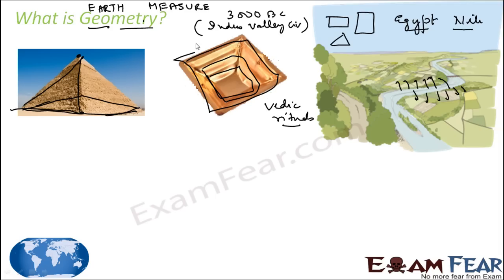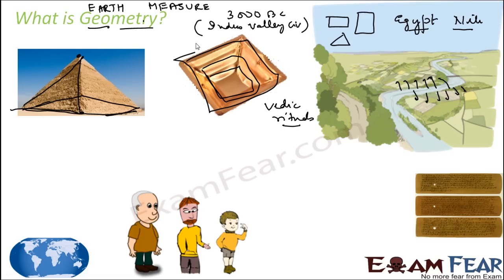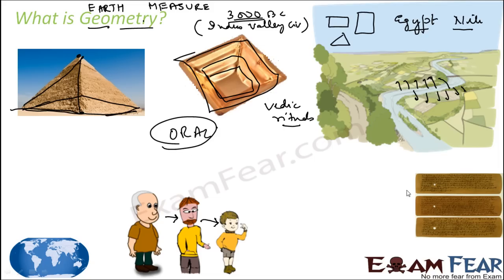People in ancient times had good knowledge of geometry, and geometry was being applied and developed everywhere in the world even 5000 years ago. However, it was happening in an unsystematic way. This information was passed from one generation to another orally, or sometimes through palm leaves. The knowledge was not passed correctly from one generation to another — geometry existed long ago, but it was unsystematic.